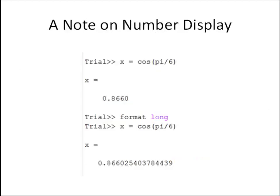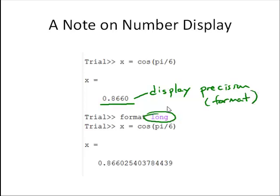Before we move on, I want to make a note on the number display. So here's some example MATLAB output, and you'll notice the default, as was the previous example, is four decimal places. That doesn't mean that there's not more precision stored in the computer memory. This is just display precision, or format.